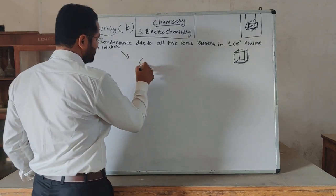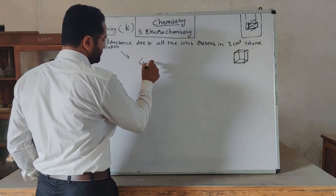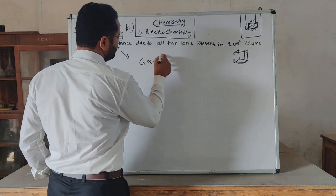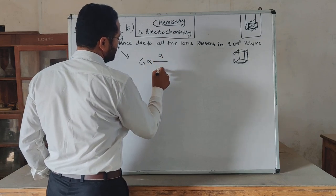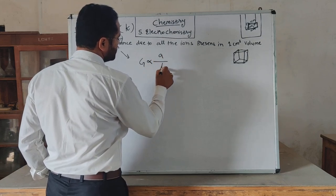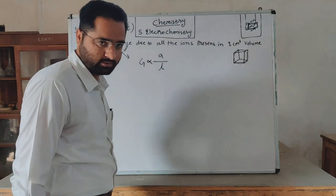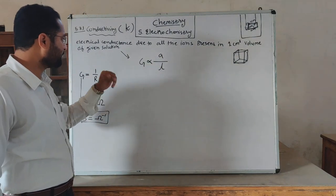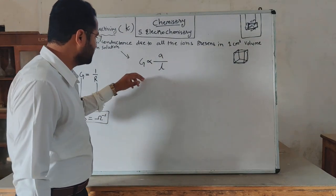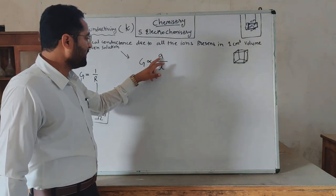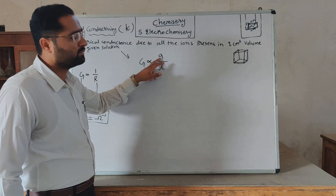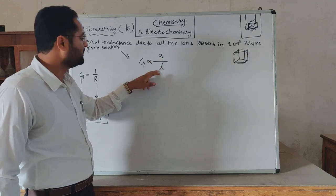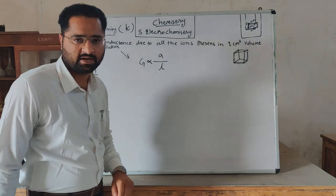G is directly proportional to A and inversely proportional to L, where G is the electrical conductance, A is the area of cross section of the wire, and L is the length.